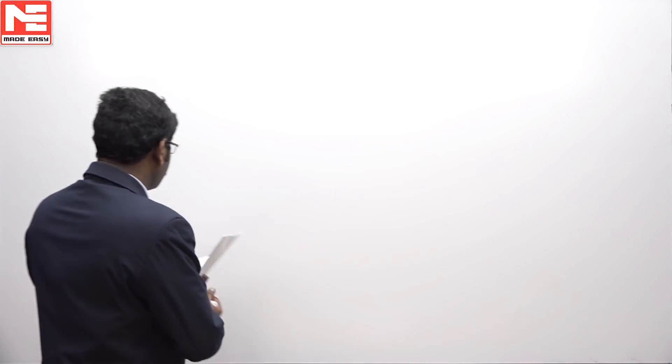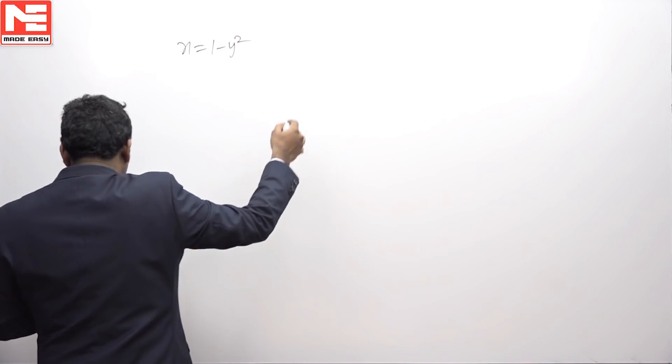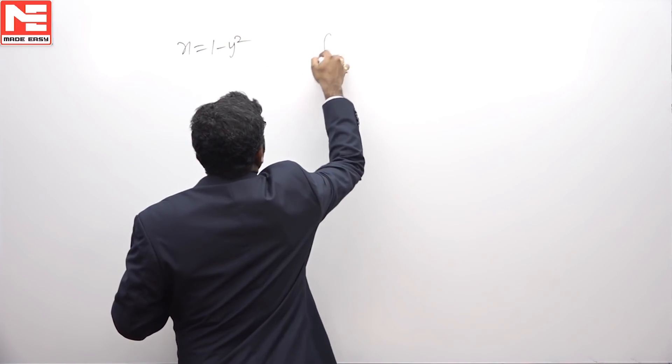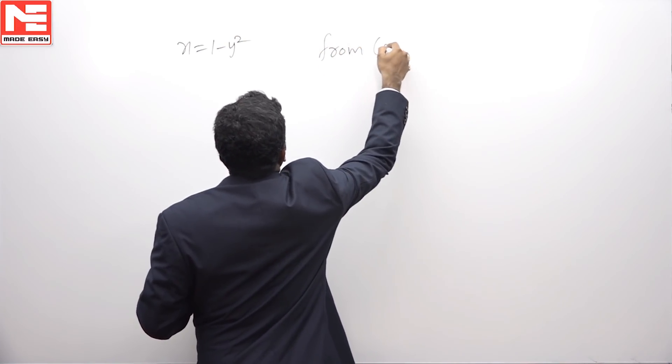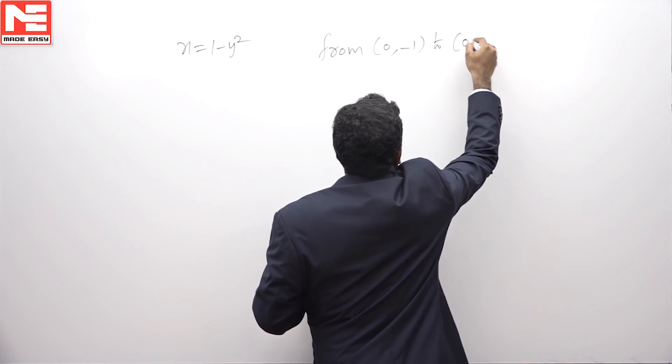Problem C is the curve x = 1 - y² from (0, -1) to (0, 1).